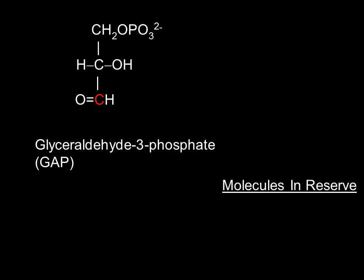At this point, it will be important for us to keep track of the molecules which we have generated. We initially started out with three ribulose-5-phosphates. Each one has created two glyceraldehyde-3-phosphates, so we currently have a total of six glyceraldehyde-3-phosphates in reserve, one of which will be used by the plant in other functions such as gluconeogenesis. The remaining five glyceraldehyde-3-phosphates will be utilized to regenerate the original three ribulose-5-phosphates.